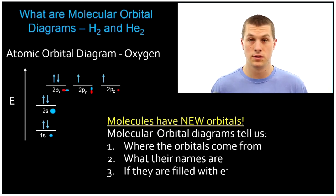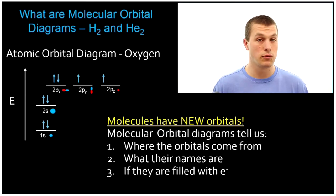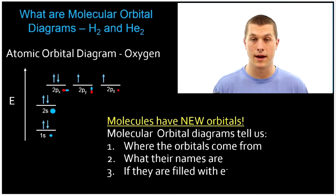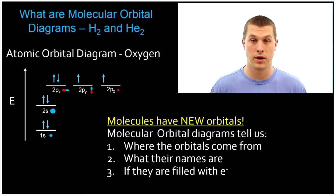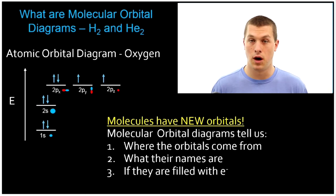It'll also tell you, just like an atomic orbital diagram, are there electrons in this molecular orbital or is it empty? There are a lot of rules you'll find that are the same — we'll fill orbitals up from the lowest energy to the highest, we'll put in unpaired electrons before we put in paired electrons, and no more than two electrons can go in an orbital. All of these rules you know, and now we're going to apply them to molecules.